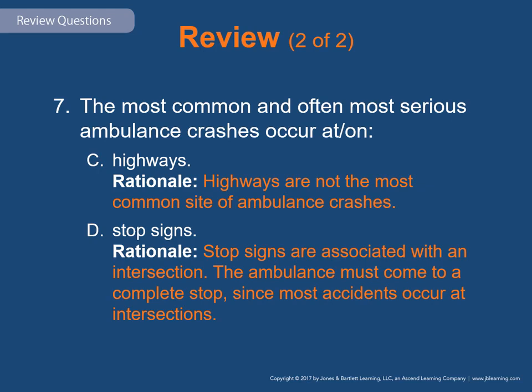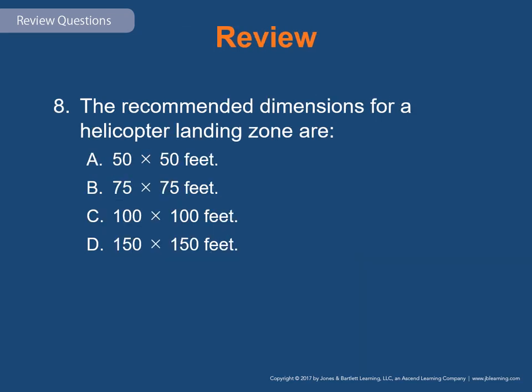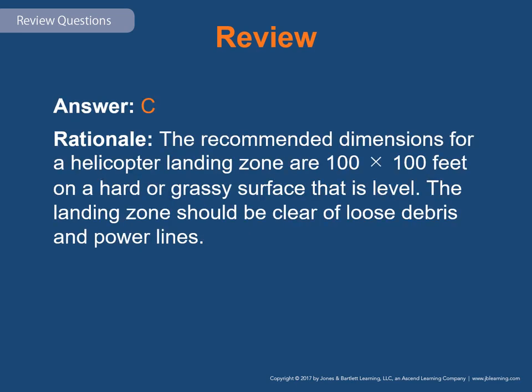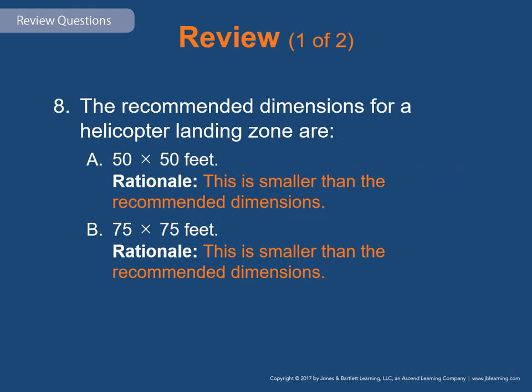Review Question 8: The recommended dimensions for a helicopter landing zone are: A) 50 by 50 feet, B) 70 by 75 feet, C) 100 by 100 feet, or D) 150 by 150 feet. The correct answer is C — recommended dimensions for a helicopter landing zone are 100 by 100 feet on a hard or grassy surface that is as level as possible, clear of loose debris, power lines, and overhead hazards. You can go to 60 by 60 feet minimum only if there is absolutely no other option.